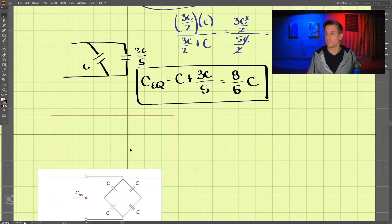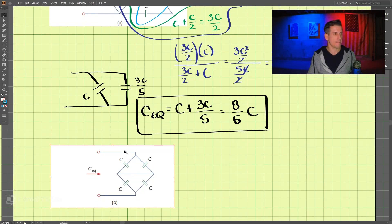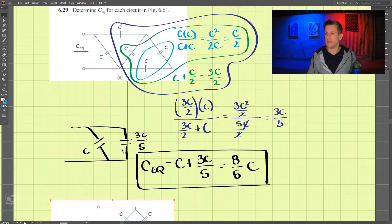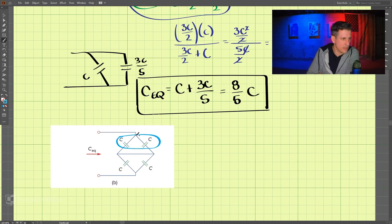Now let's move to part B. So I believe these are in parallel because they're connected here and here, and that would be together. Those are parallel.